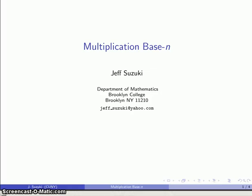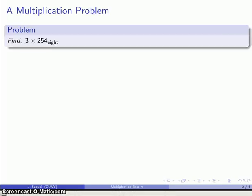Let's begin a discussion of multiplication by considering how you would multiply in base n. For example, let's take a typical multiplication: find the product 3 times 254 base 8.